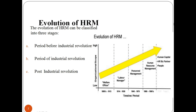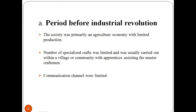Let us have a look at the evolution of human resource management. The early part of the century saw a concern for improved efficiency through careful design of work. During the middle part of the century, emphasis shifted to employee productivity. Recent decades have focused on increased concern for quality of working life, total quality management, and workers' participation in management. These three phases may be termed as welfare, development, and empowerment.